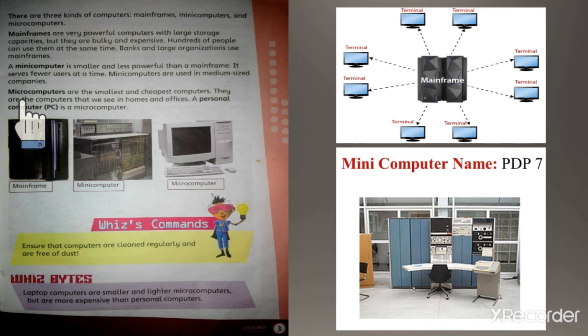The next type is micro computer. Micro computers are the smallest and cheapest computers. They are the computers that we see in homes and offices. A personal computer is a micro computer. Iski speed aur storage capacity baqi dono computers ke muqable mein kam hai, yehi wajah hai ke yeh ghar aur offices mein use hote hain.